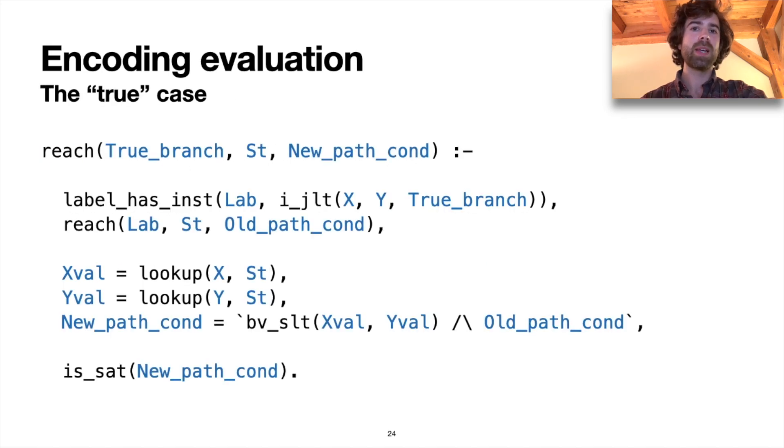We would actually need a different HORN clause defining each possible step the evaluator can take. So on this slide, we have the rule defining what happens when we reach a conditional jump and we take the jump. So let's break this down a little bit.